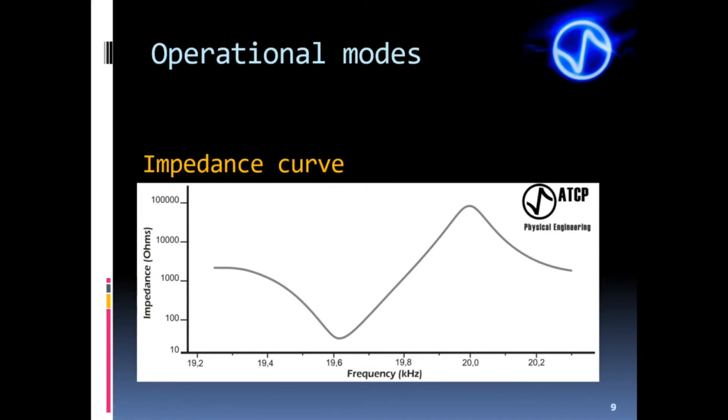For example, if a generator applies 20 kilohertz to the acoustic stack, it will offer an impedance of nearly 100 kilo-ohms. If the generator applies 20.1 kilohertz, the impedance offered by the stack drops to just over 10 kilo-ohms, a 90 percent difference. If the generator applies about 19.6 kilohertz, the impedance will almost short circuit. Small frequency deviations cause huge changes in the impedance offered.